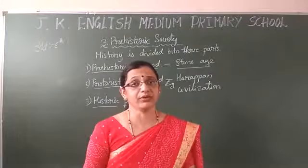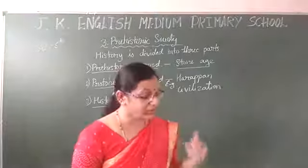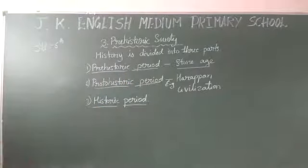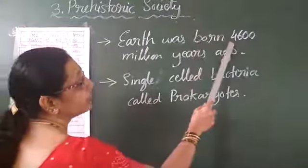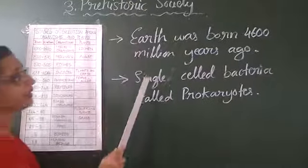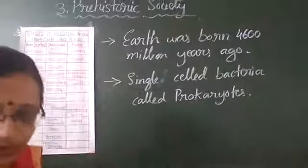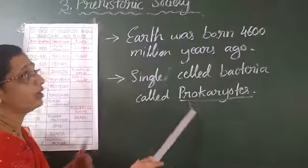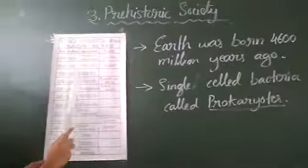Now, a very curious matter — when did the earth evolve, how did man come to earth, and before man, what animals and bacteria were there? That I am going to explain in this chapter. The earth was born nearly 4,600 million years ago. When the earth started, only single-celled bacteria were there. They are called prokaryotes — single-celled organisms, only bacteria.